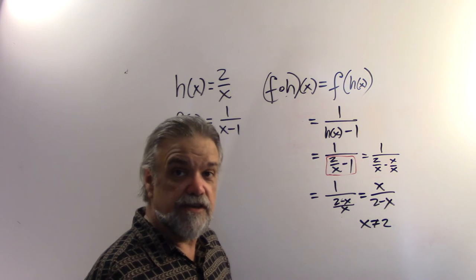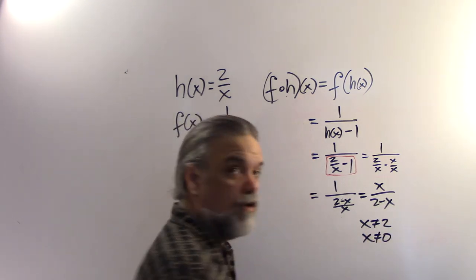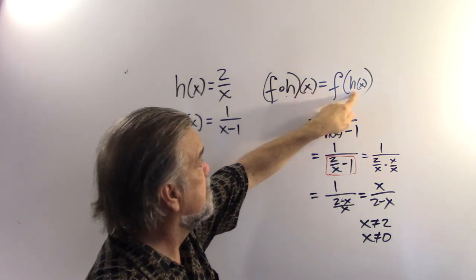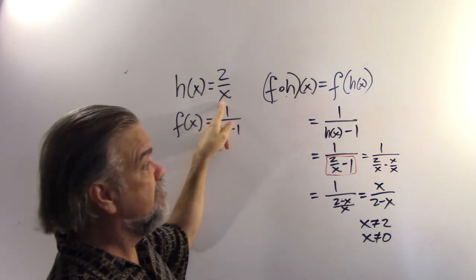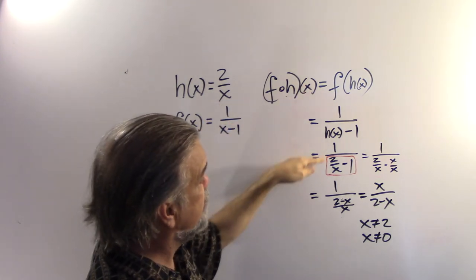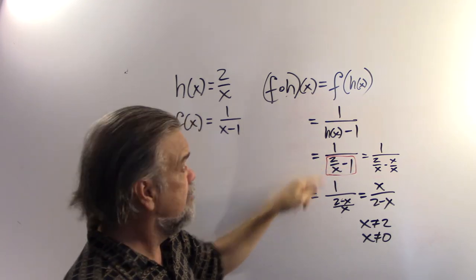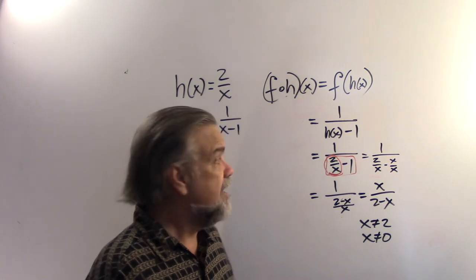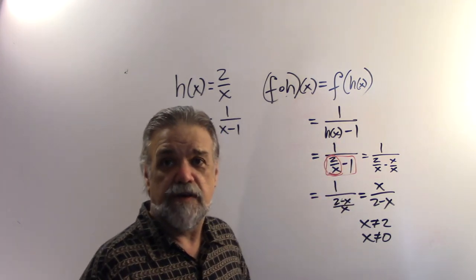But x can also not equal 0. Why? Because our inside function, h of x, has a domain of x not equal to 0. Look what we did through here. We did 1 over 2 over x minus 1. If x is 0, then this little guy right here would be undefined. And I don't know what 1 over undefined minus 1 is. I can't evaluate that.